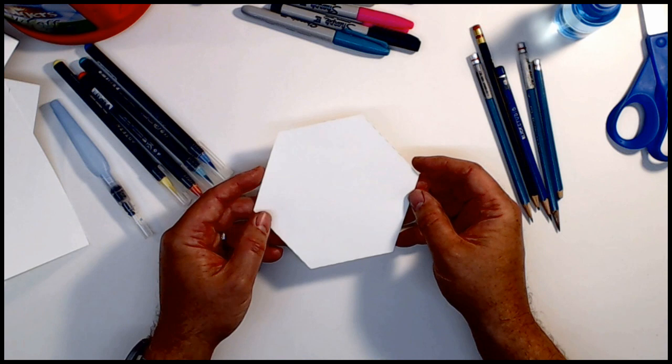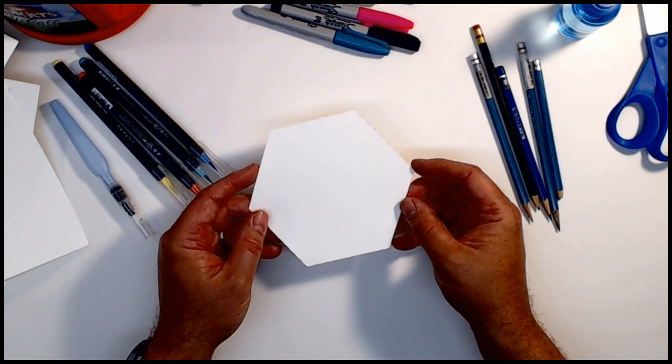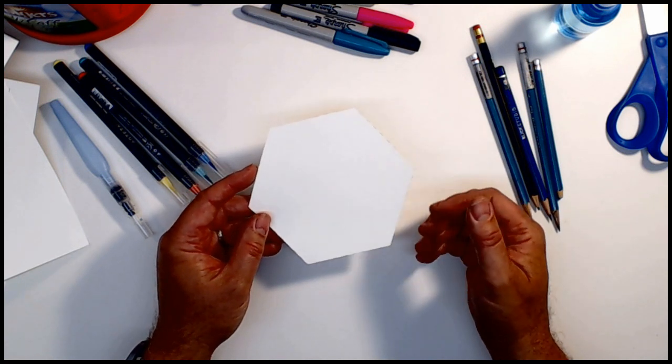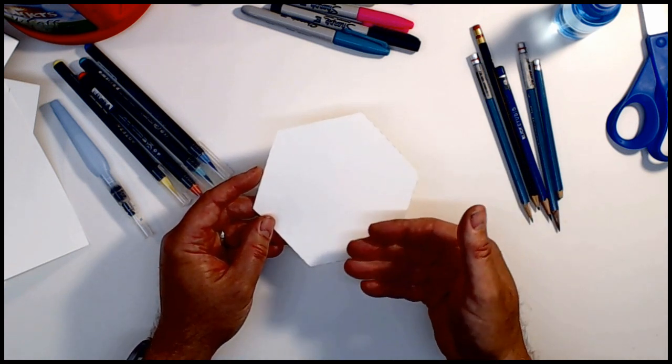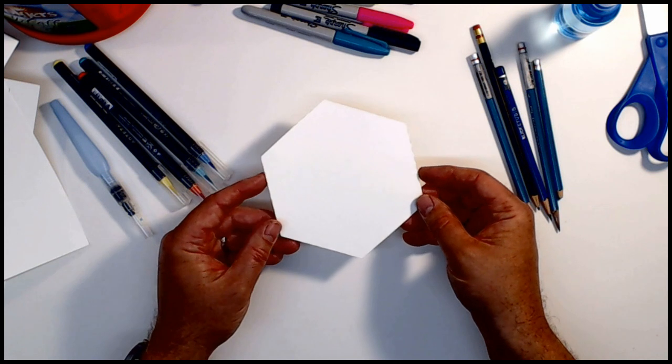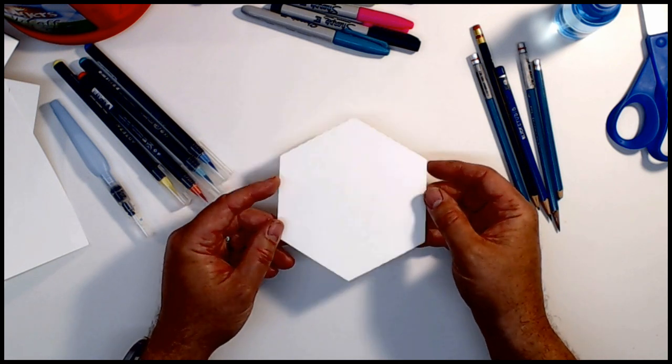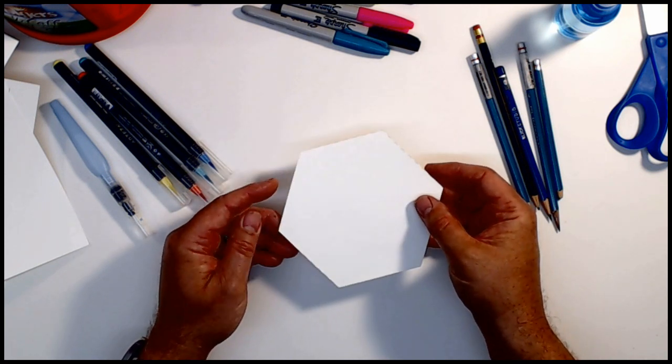Again, you can use color, crayons, paint, markers. If you just want to do black and white, that's just fine. You can write on it. You can do poetry, short story, musings, collections of words, anything you'd like.